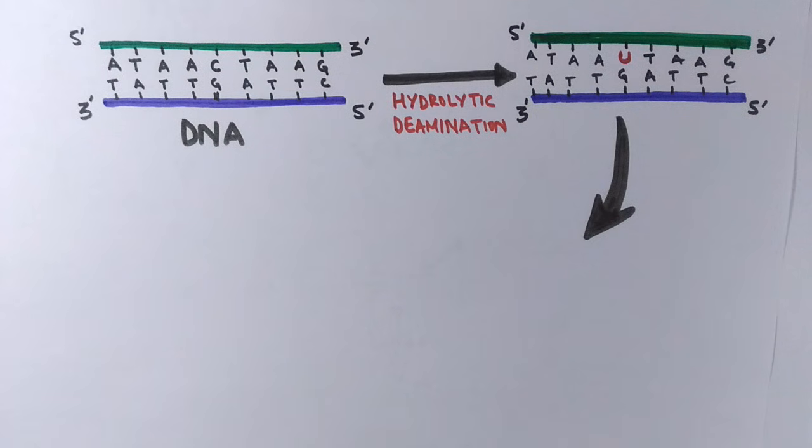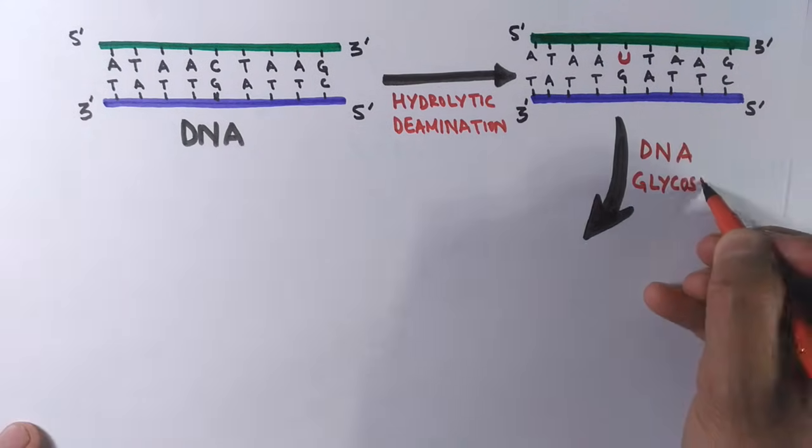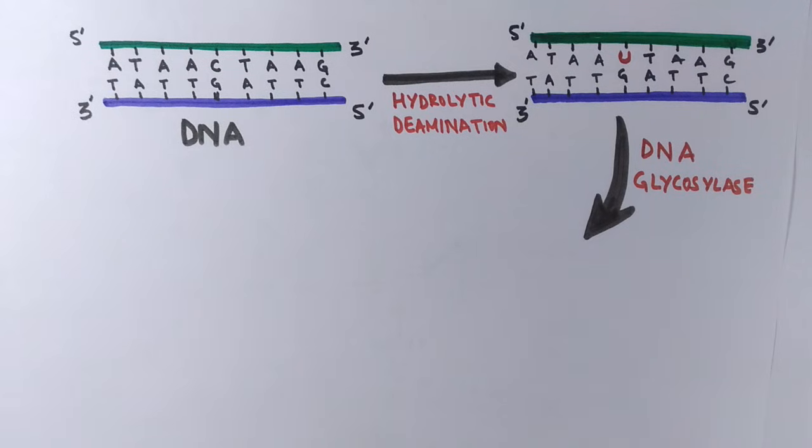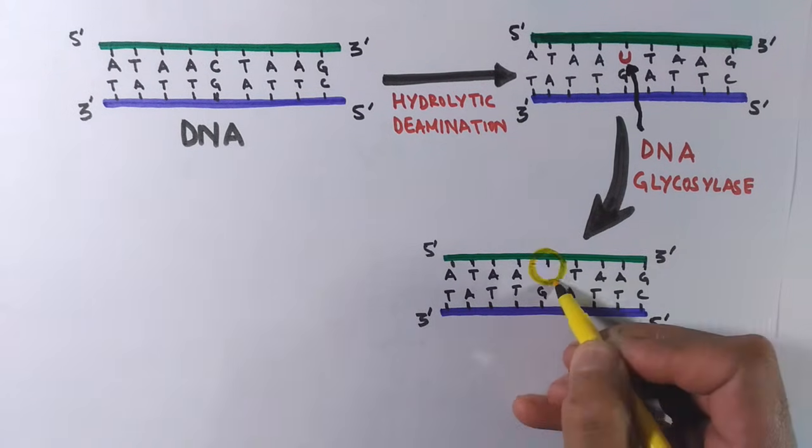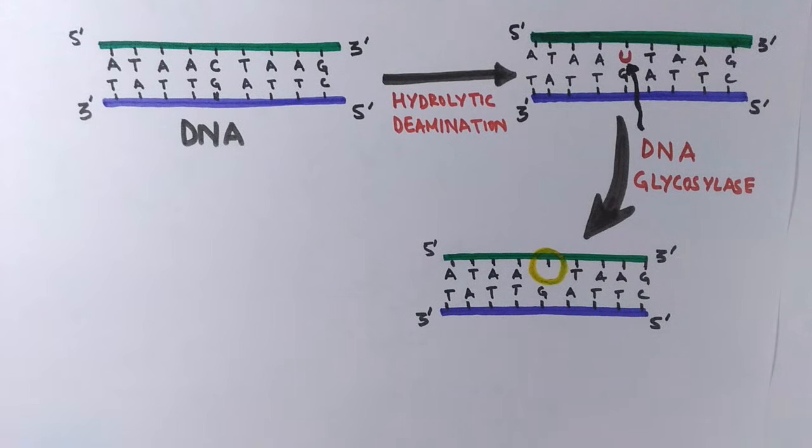This changes the genetic code and causes point mutation. After having uracil in the strand of DNA, it's immediately countered by DNA glycosylase—that's uracil DNA glycosylase.